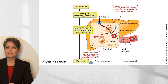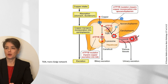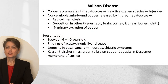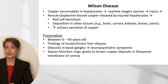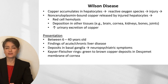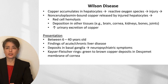Mutations in ATP7B affect both processes, preventing incorporation into ceruloplasmin and blocking biliary excretion. Copper accumulates in hepatocytes and, like iron, generates reactive oxygen species causing injury. Non-ceruloplasmin-bound copper released by injured hepatocytes causes red cell hemolysis and is deposited in other tissues such as brain, cornea, and kidneys. Increased urinary copper excretion can also be detected.